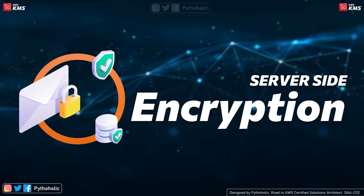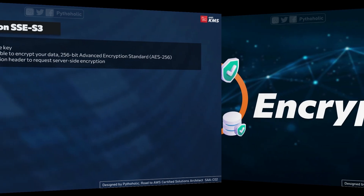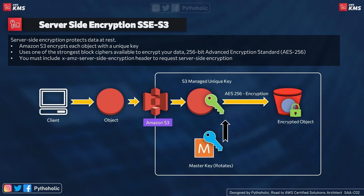Let's start with server-side encryption. Server-side encryption is the encryption of data at its destination by the application or service that receives it — it keeps your data secure after transit, at the server side. The first type to discuss is server-side encryption with AWS S3 managed keys, or SSE-S3.